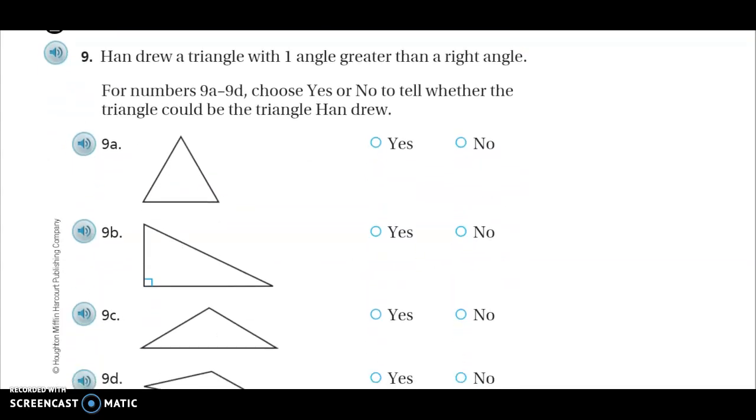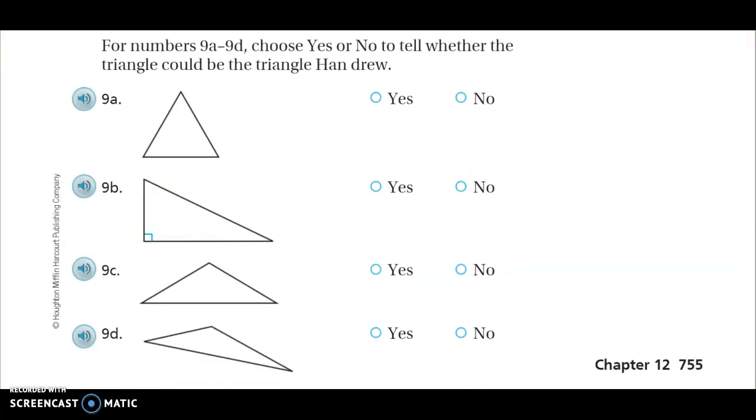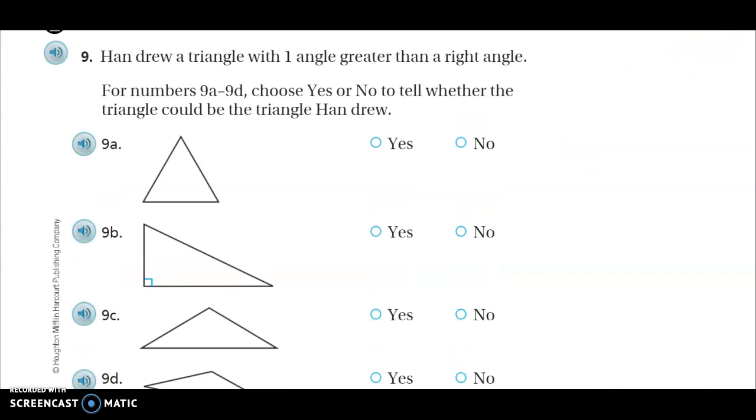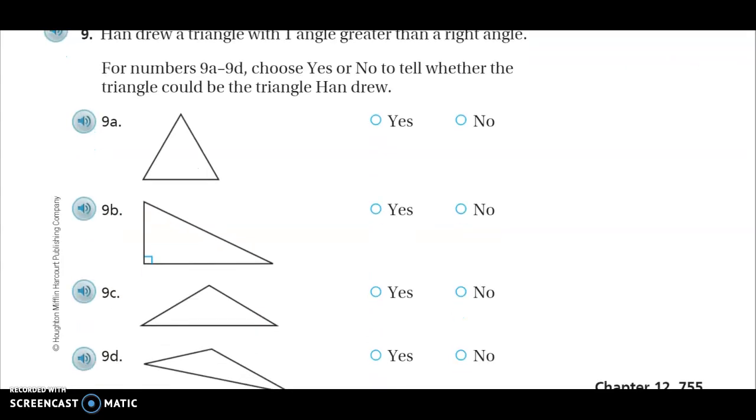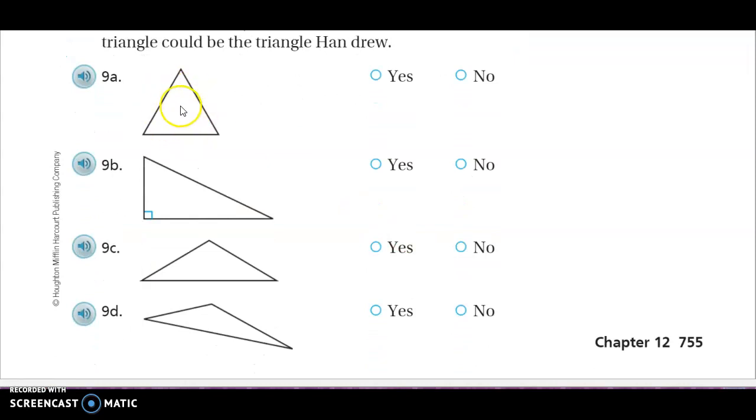Number nine. Han drew a triangle with one angle greater than a right angle. For numbers 9A through D, choose yes or no to tell whether the triangle could be the triangle that Han drew. Now that has to be Han Solo because not many people are named Han. So Han Solo drew a triangle with one angle greater than a right angle. So Han Solo loves drawing shapes in the Millennium Falcon.